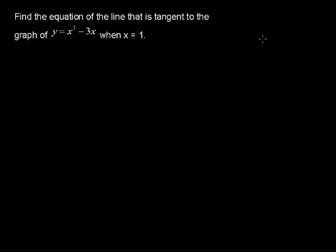In this video, I'll show you how to find the equation of a line that is tangent to a graph. And we're given those instructions. Find the equation of the line that is tangent to the graph of y equals x to the third minus 3x when x equals 1.